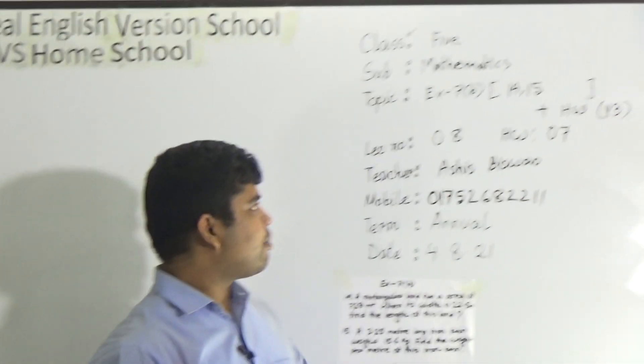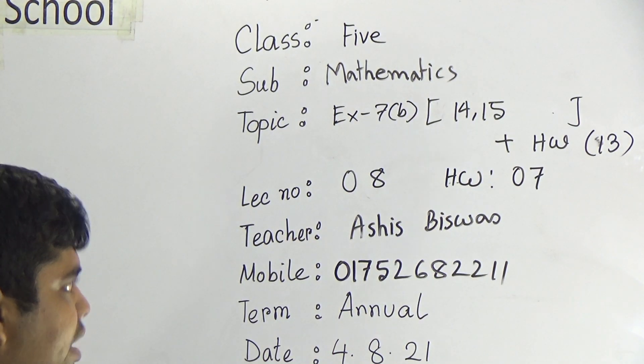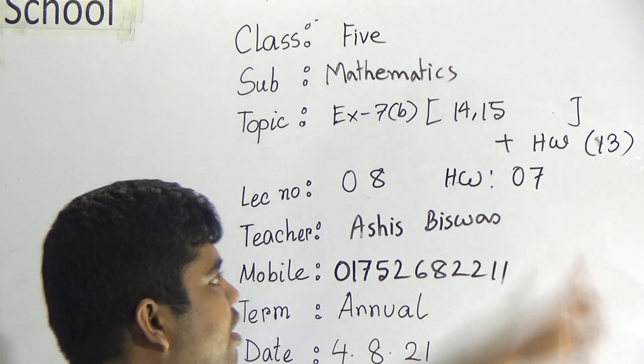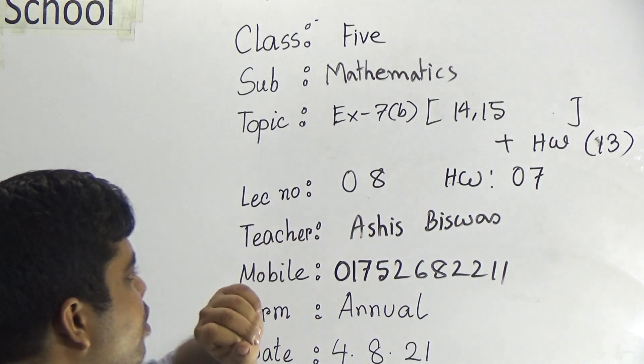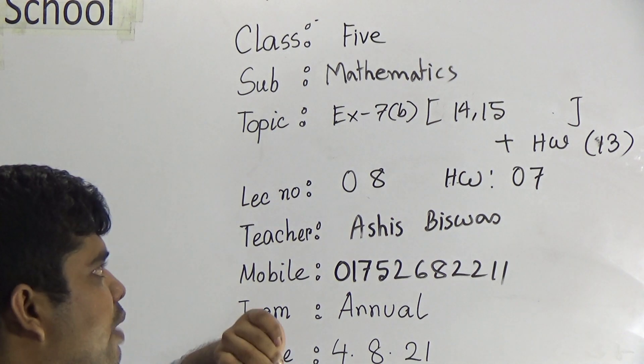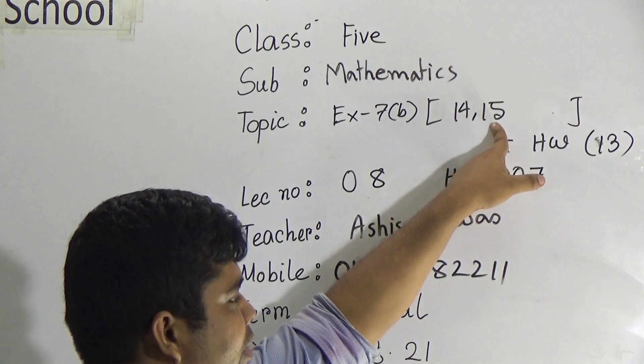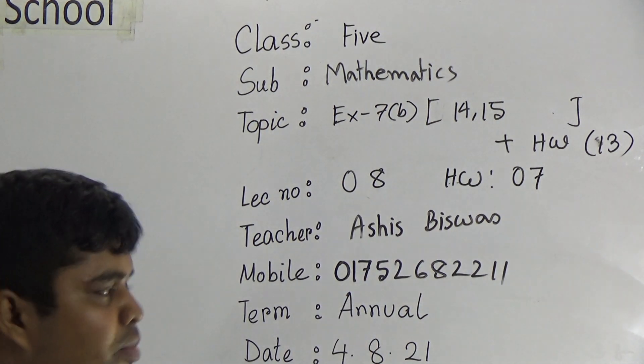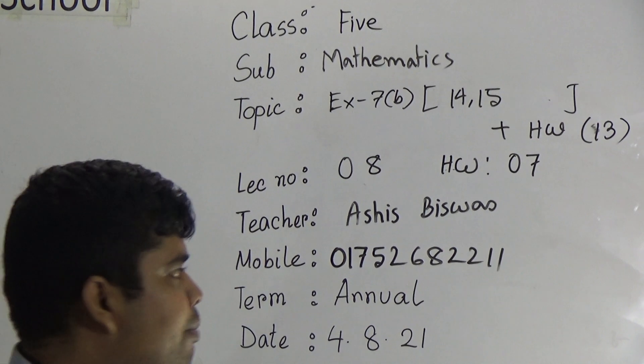Today is our lecture number 8 of half of annual term and today's HW number will be 7. My dear students, our today's topic name is Exercise 7B. From 7B, we shall solve two odd problems in our class, odd problem number 14 and odd problem number 15. Another odd problem, that means odd problem number 13, will be your HW, HW number 7.